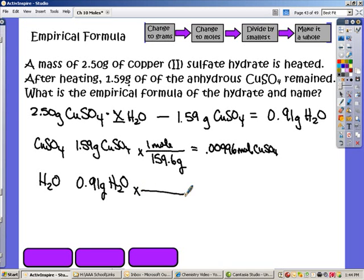And I'm going to change it to moles. And when I run that calculation, I got .050. So now I know how much water I have in moles, and I know how much copper sulfate I have in moles.